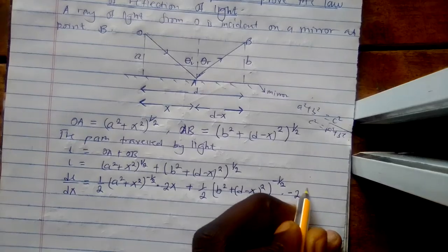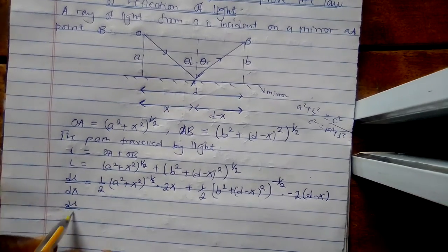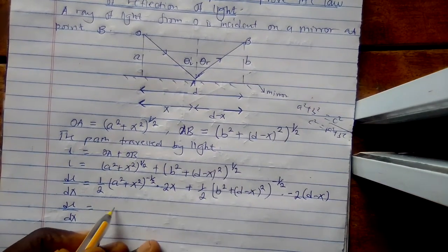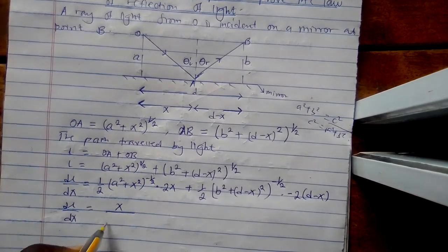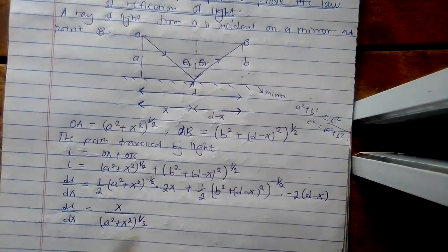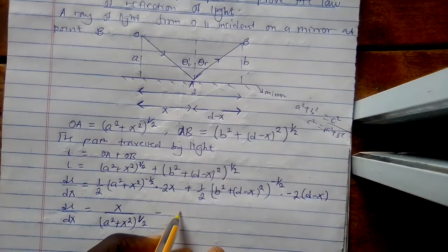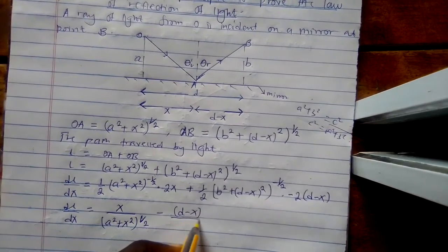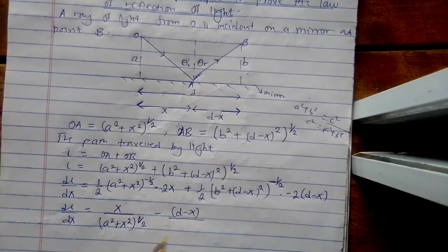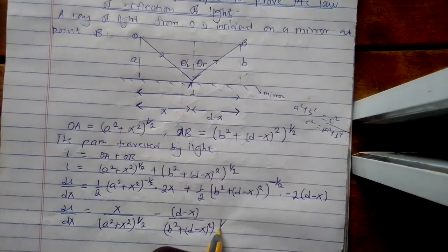The 2 will drop into (D minus x), giving a negative sign from differentiating (D minus x). So dL/dx equals x over (a² + x²)^(1/2), minus (D minus x) over (b² + (D minus x)²)^(1/2).